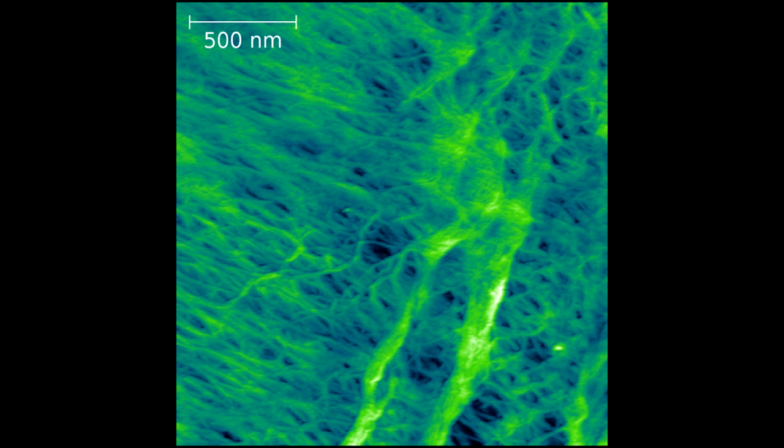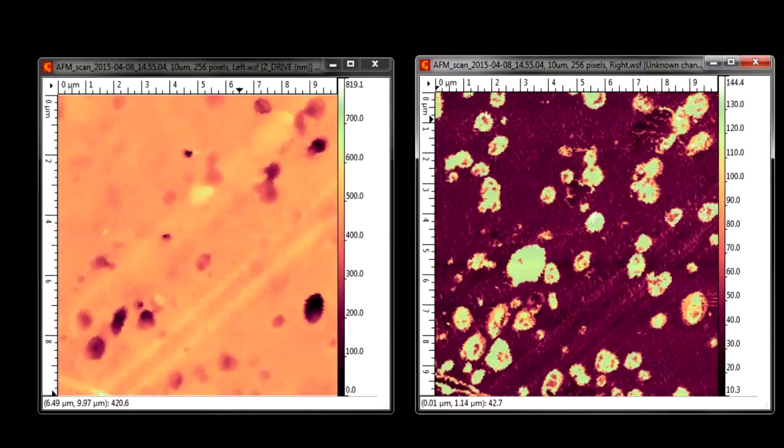The TT2 AFM is ideal for distinguishing characteristics of polymers. On the left is a topography image, which allows for measurement of surface features. On the right is a phase image, which allows us to visualize components of the polymer.